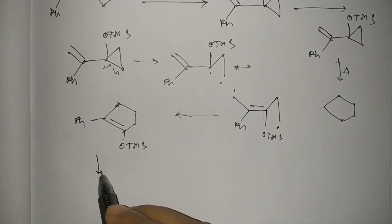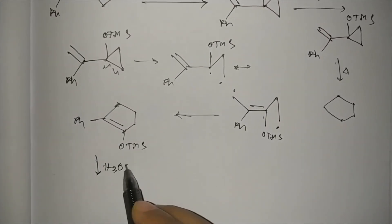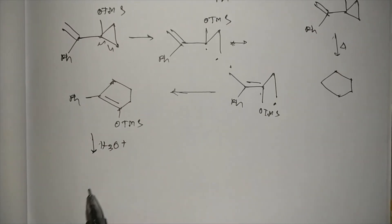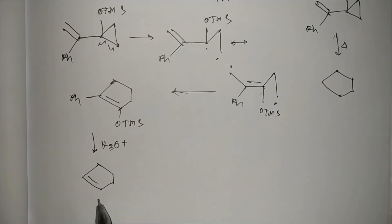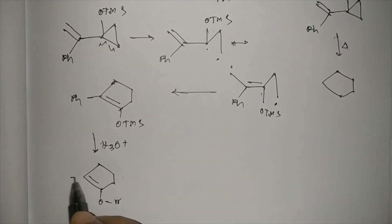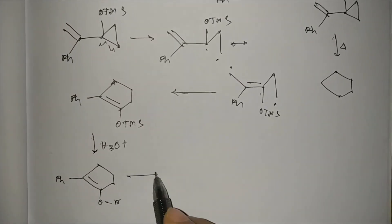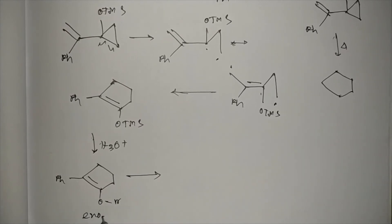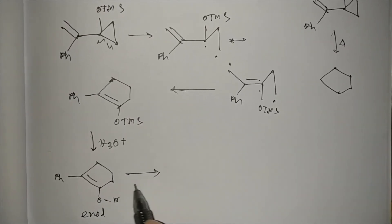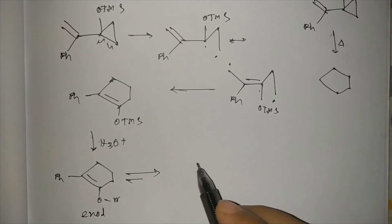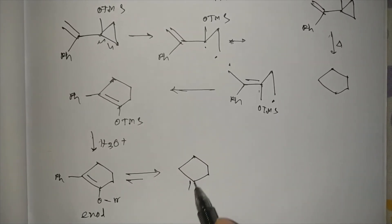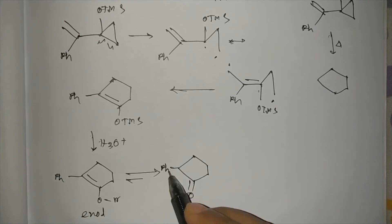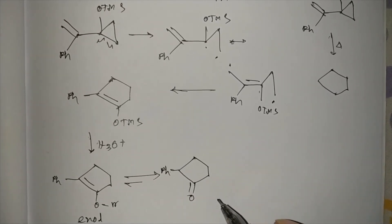If it is hydrolyzed with acid, then OTMS will be OH. So it will be OH, and this is an enol. It will be tautomerized to more stable keto form. So this will be the A.